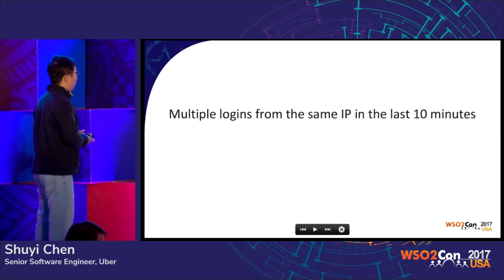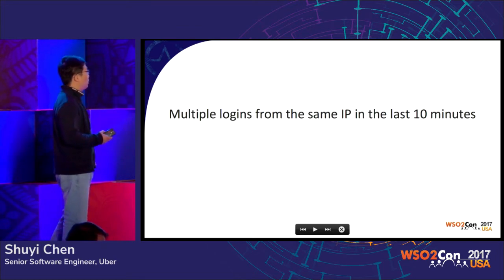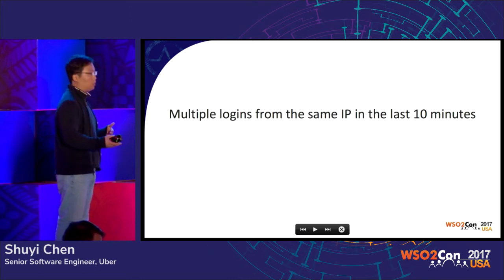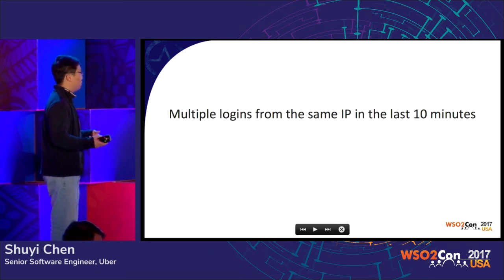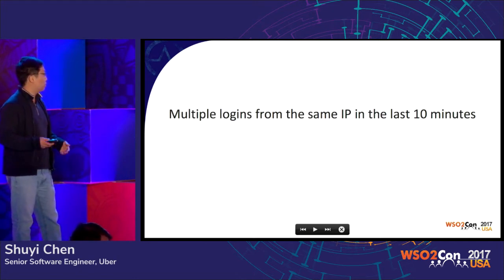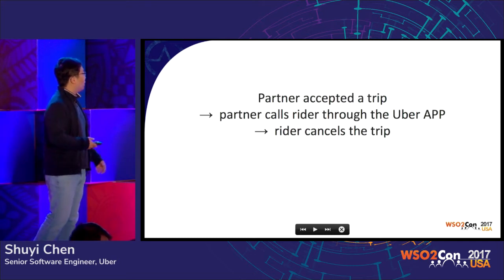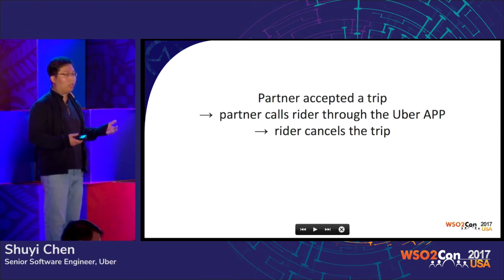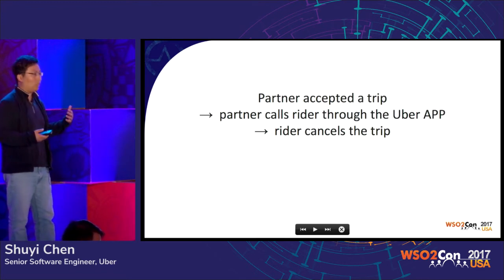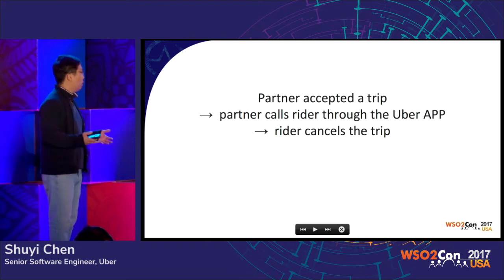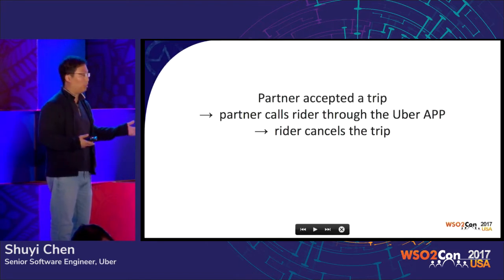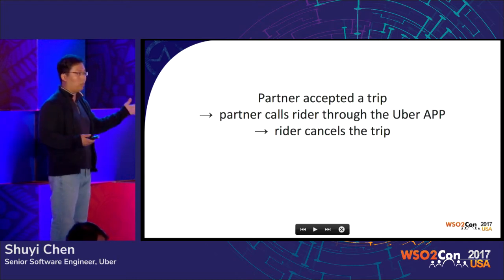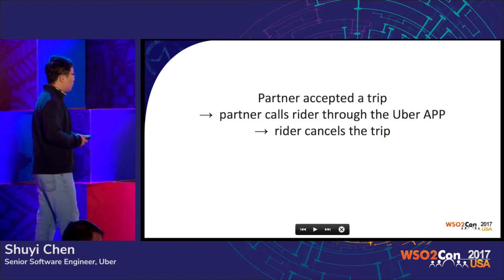For example, if we detect multiple logins from the same IP address in the last 10 minutes from the login log, we can actually take actions to try to ban the IP from login to prevent fraudulent users from abusing the system. Another example: a partner tries to game the system by first accepting a trip, then calling the rider to ask where they're going. If the partner doesn't feel comfortable going to the destination, they ask the rider to cancel the trip. This pattern is bad for rider experience, and if we can detect this in real-time, we can take actions to improve the rider experience.